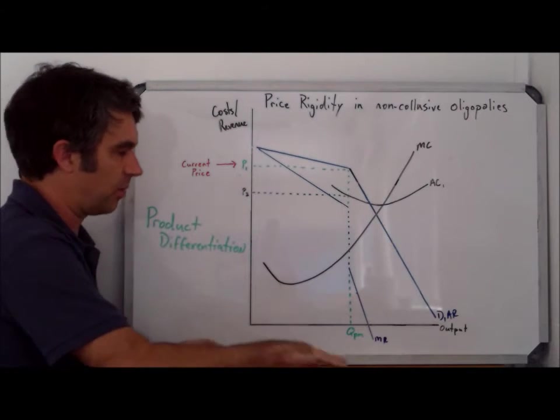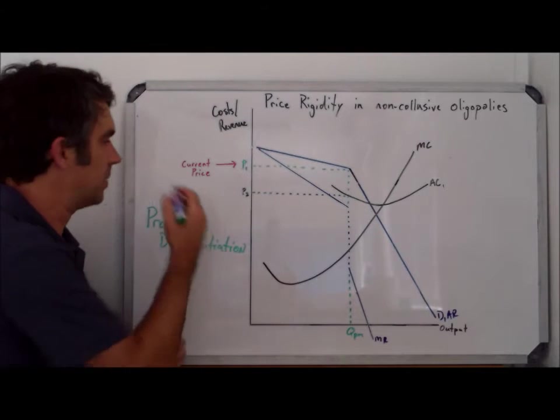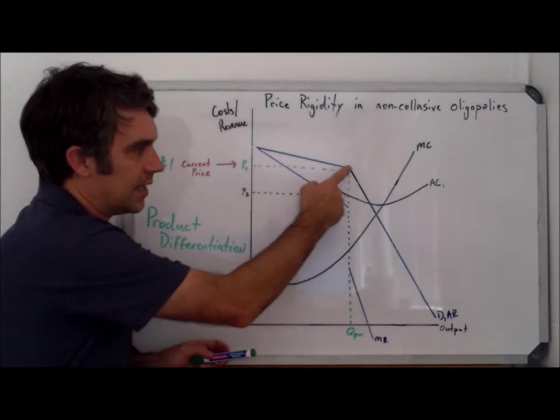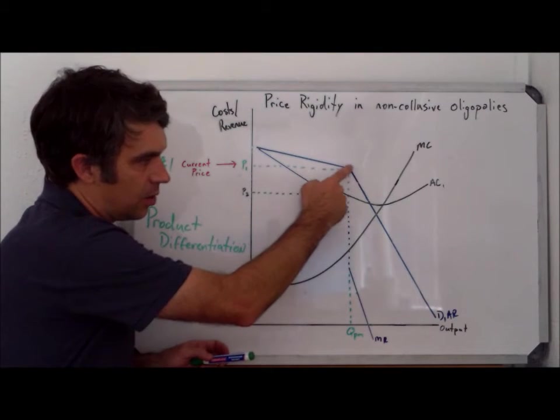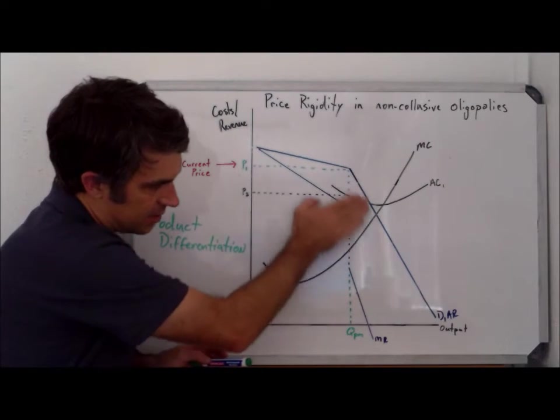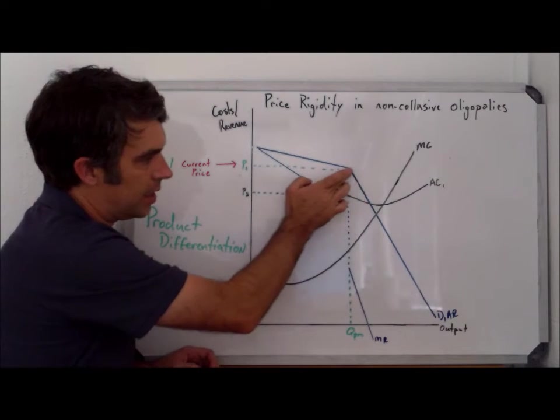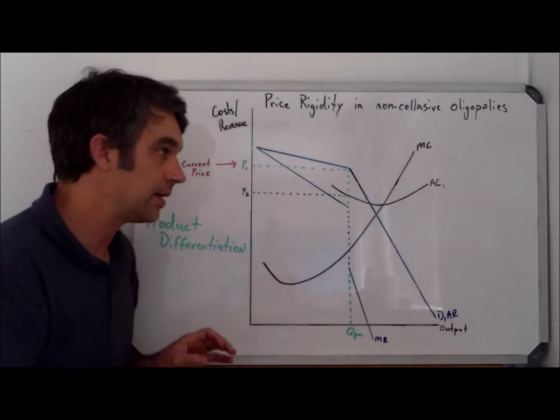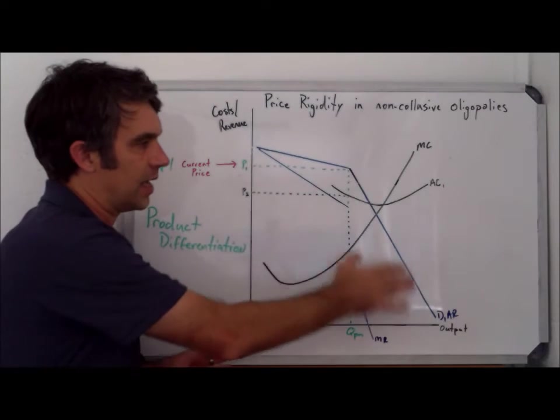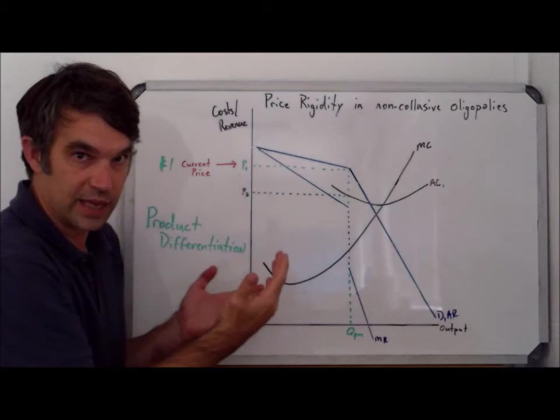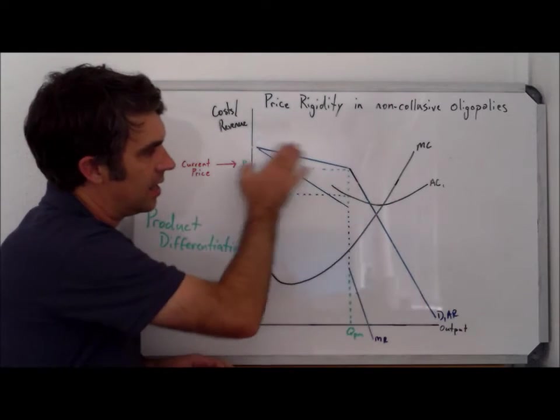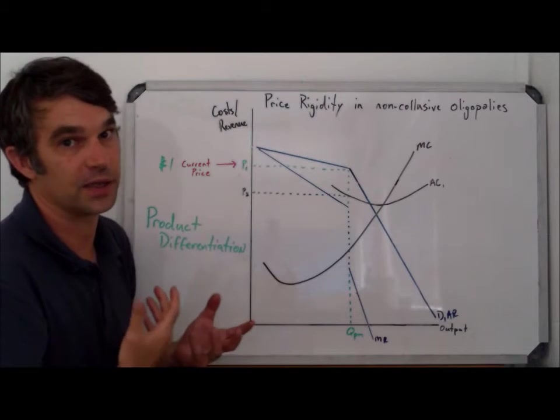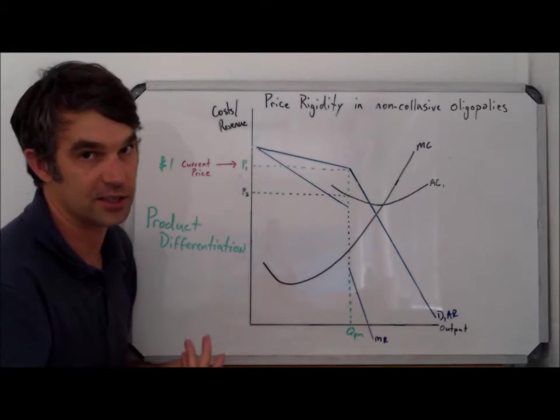What we see is we start with the current price. We said that for Coke or Pepsi, this is around a dollar. So if that's the current price here on the demand curve, we see that if we lower the price, the demand curve is relatively inelastic. But if we raise the price, the demand curve above that price is relatively elastic. We call this the kinked demand curve. A kink is a bend, so we see a demand curve with a bend in it. And from this, we get an important understanding about how oligopolies operate in regard to their pricing decisions.